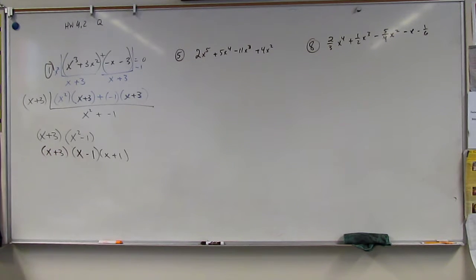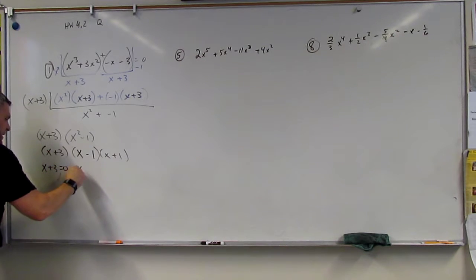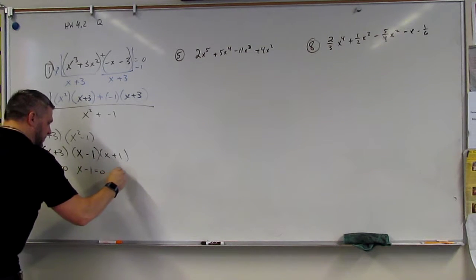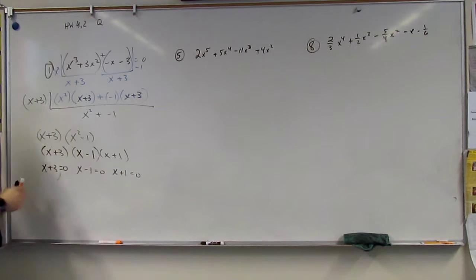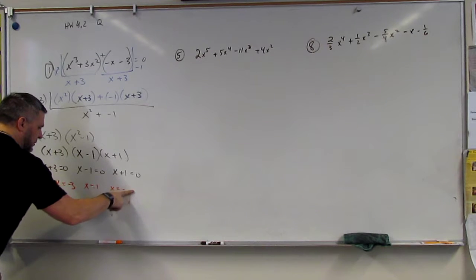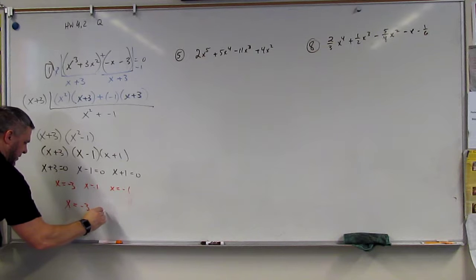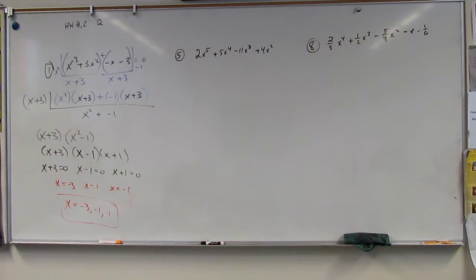And then we set each one equal to 0. So X plus 3 equals 0, X minus 1 equals 0, X plus 1 equals 0. And you solve. And you get X equals negative 3, X equals 1, X equals negative 1. And then you put it in order. X equals negative 3, negative 1, and 1. And done. And that's finding the zeros.